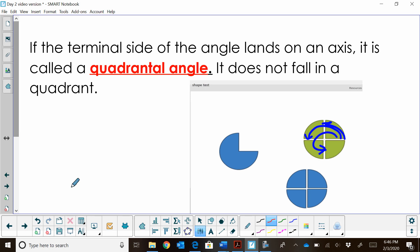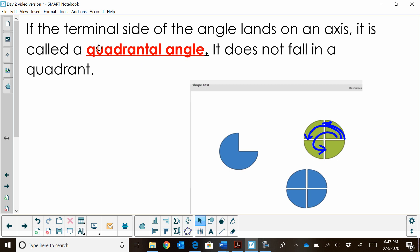So what if an angle doesn't end in a quadrant? What if it ends on an axis? Well, that would be called a quadrantal angle. So let's look at some angles that are quadrantal angles. So starting on the x-axis, if I rotate up to what we are used to as 90 degrees, that's just going to be pi halves in radians.